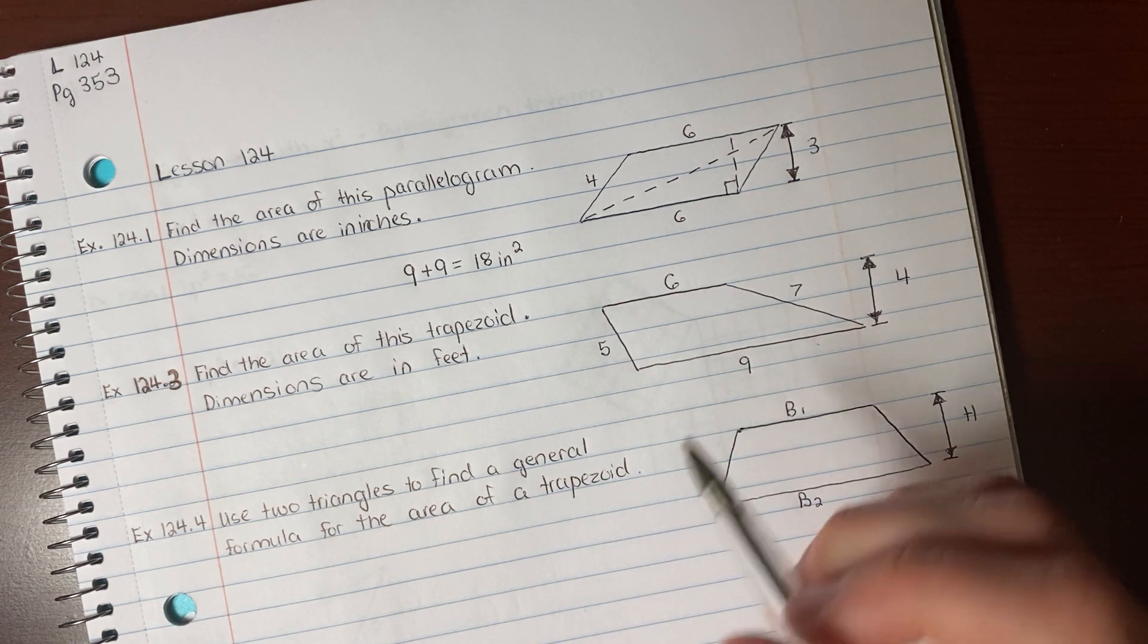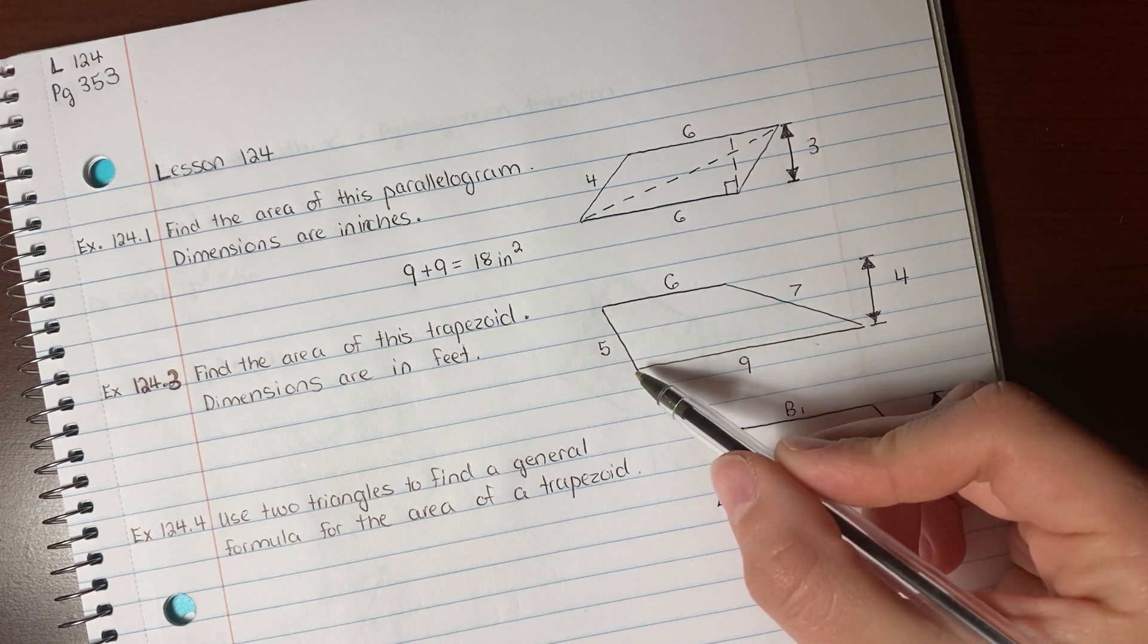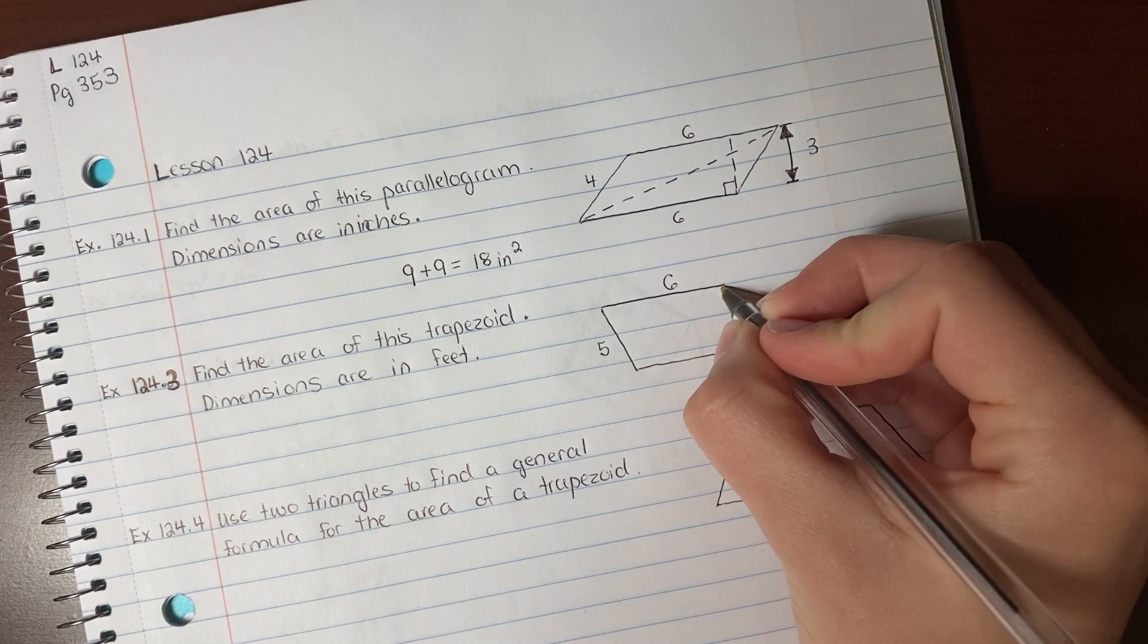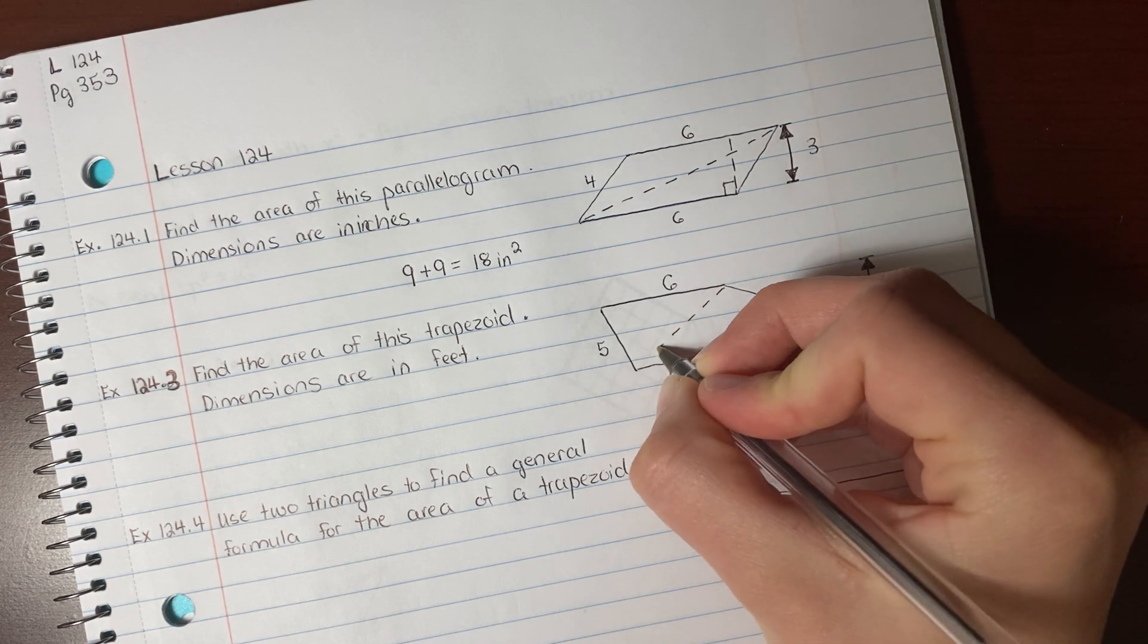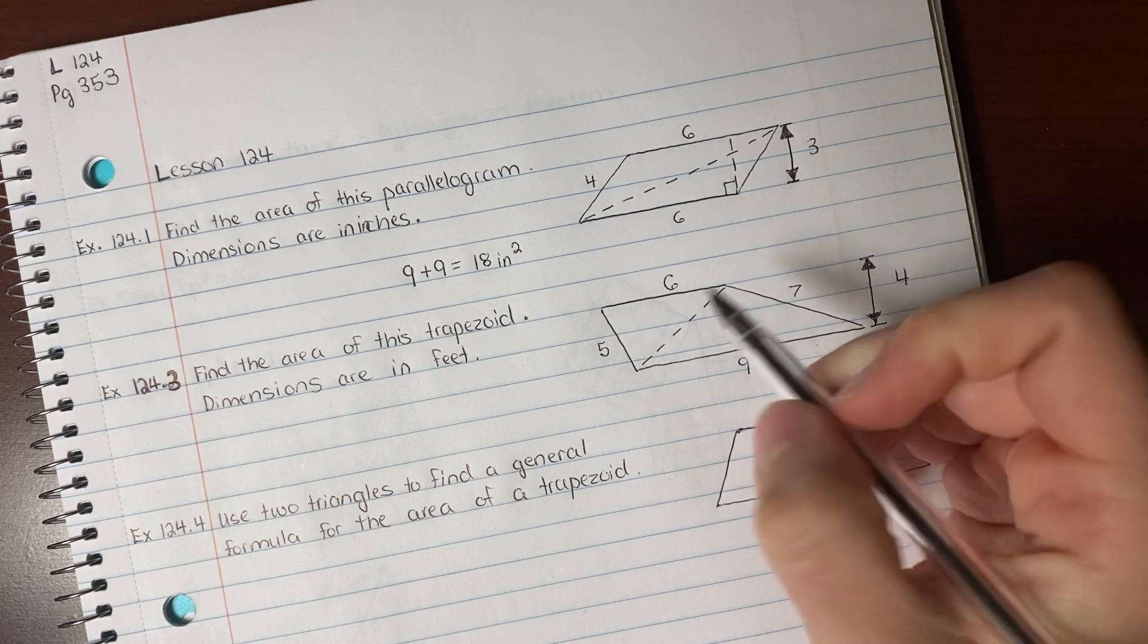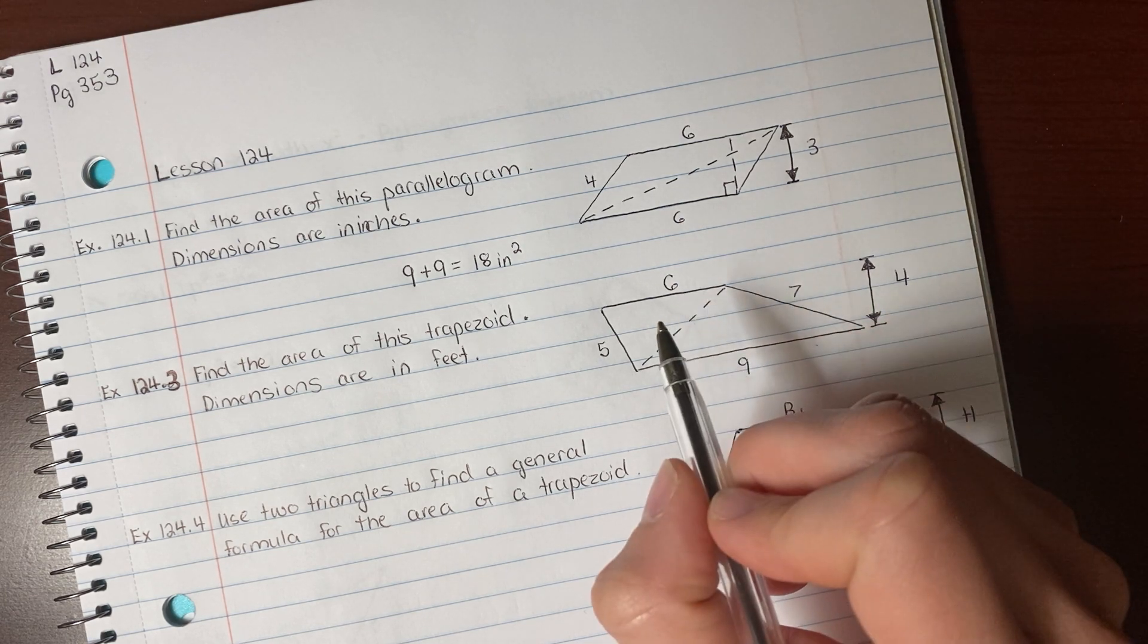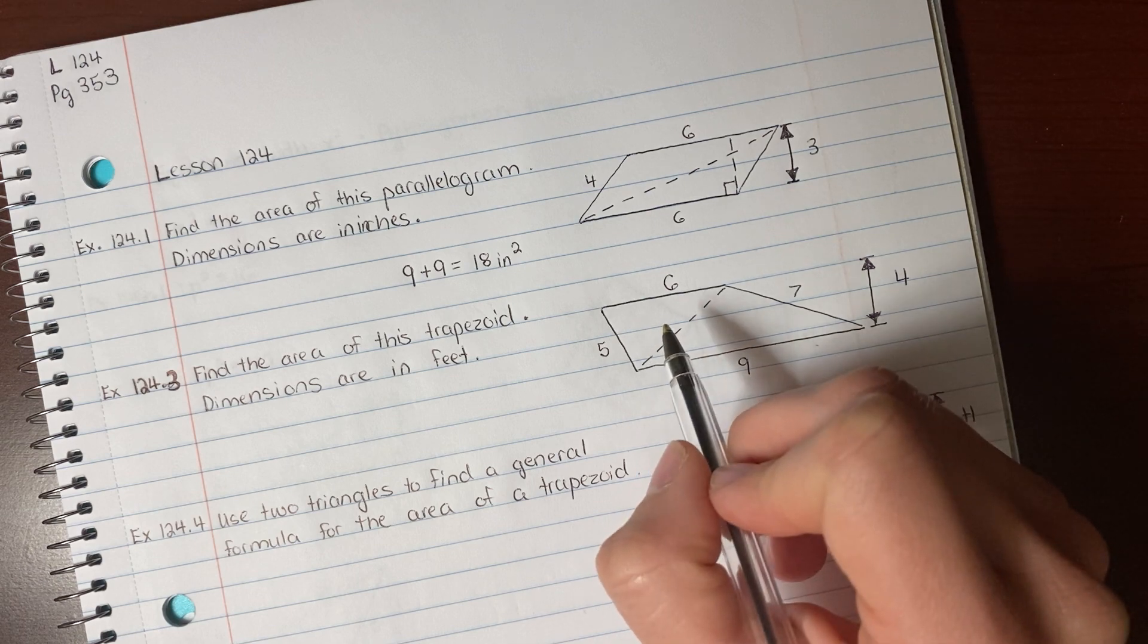So you're going to do the same thing. We can draw a dotted line here or here. Let's go ahead and draw one here. So we're dividing this into two triangles. So for this triangle right here, we are going to do base times height divided by 2.